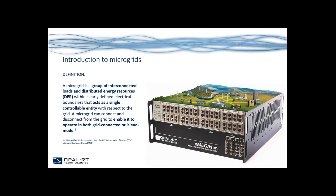First, an introduction to microgrids. The definition of the United States Department of Energy microgrid exchange group goes like this: a microgrid is a group of interconnected loads and distributed energy resources within clearly defined electrical boundaries that acts as a single controllable entity with respect to the grid. A microgrid can connect and disconnect from the grid to enable it to operate in both grid-connected and island mode.